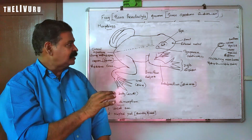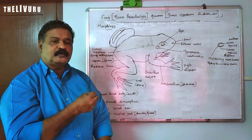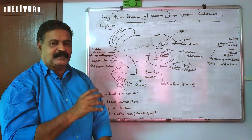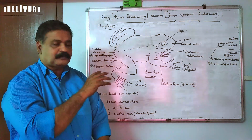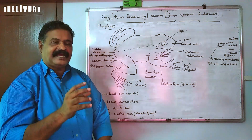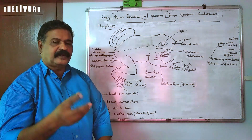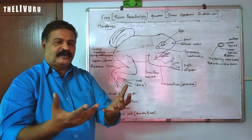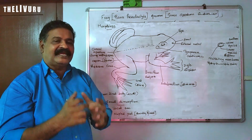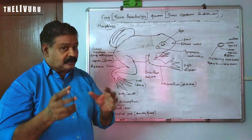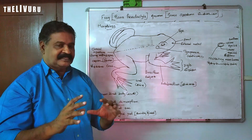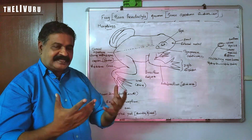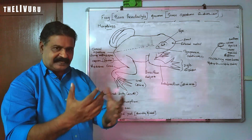The skin is loosely arranged. There are slimy glands which secrete mucus. This nature helps the animal to escape from predators.